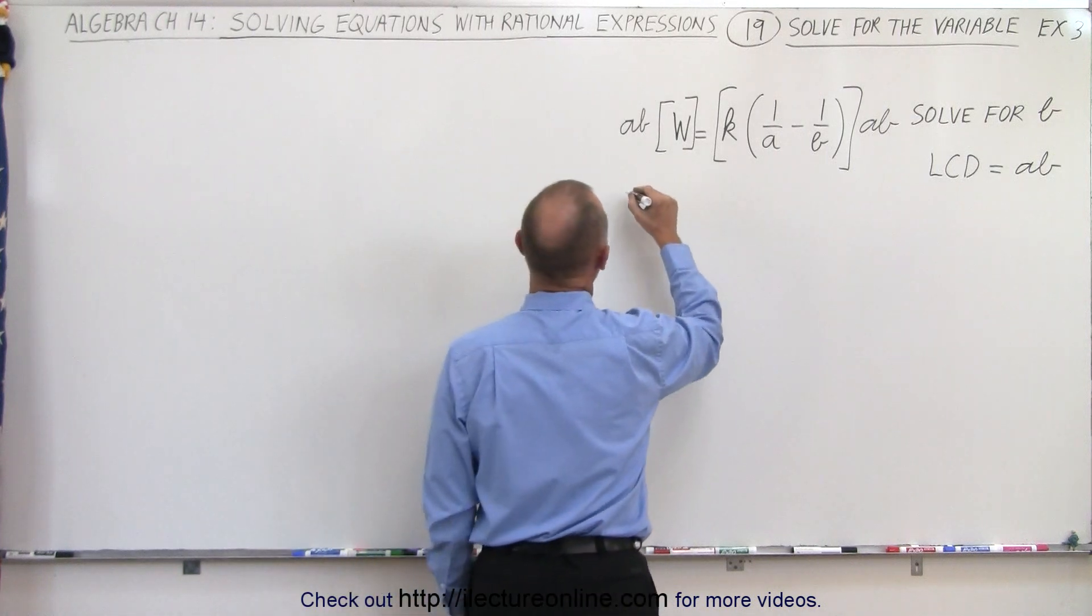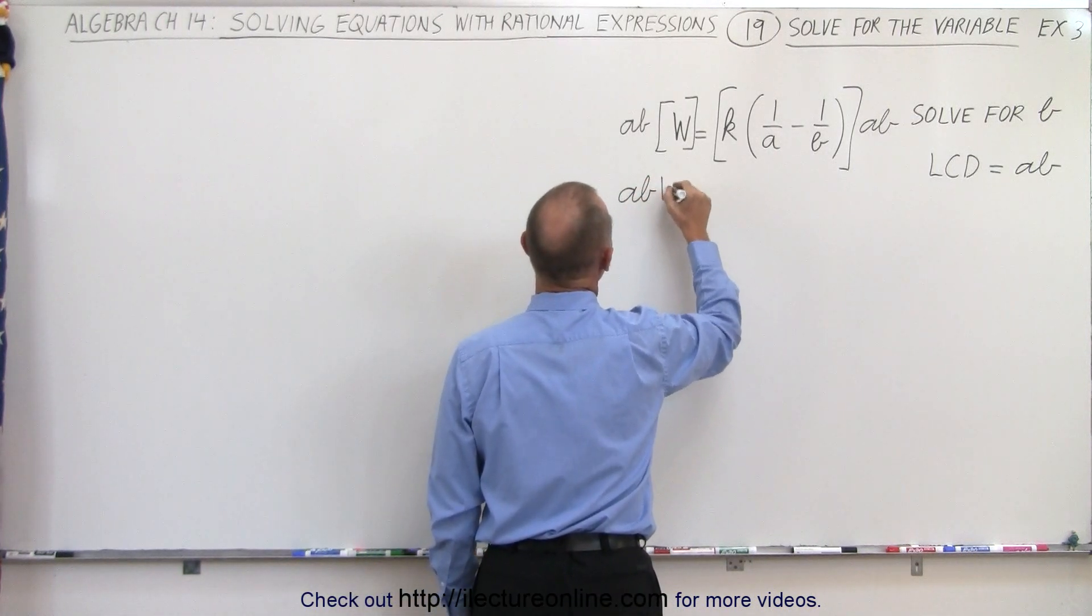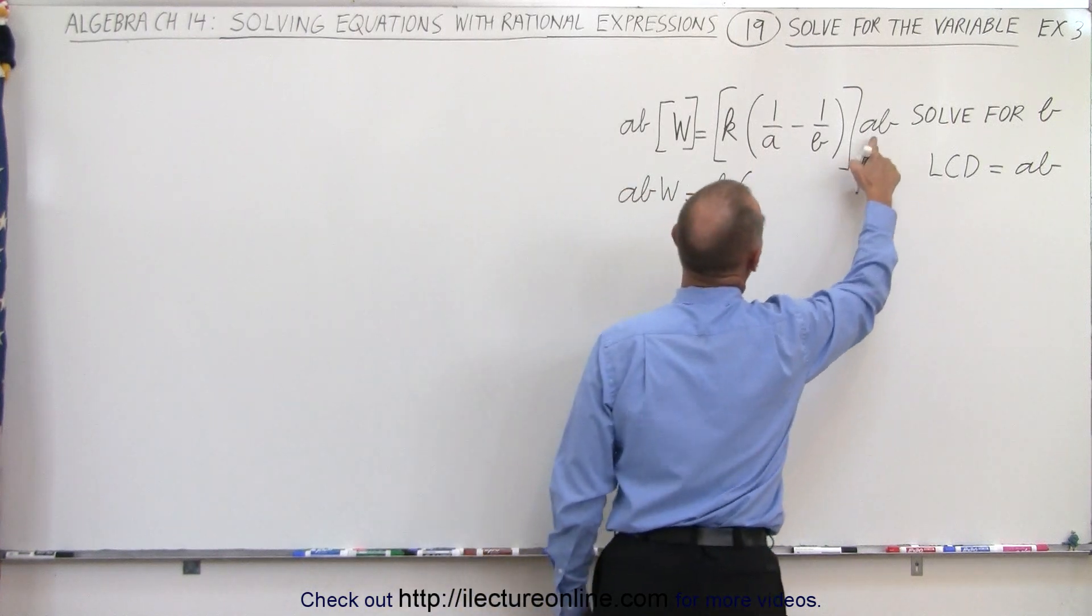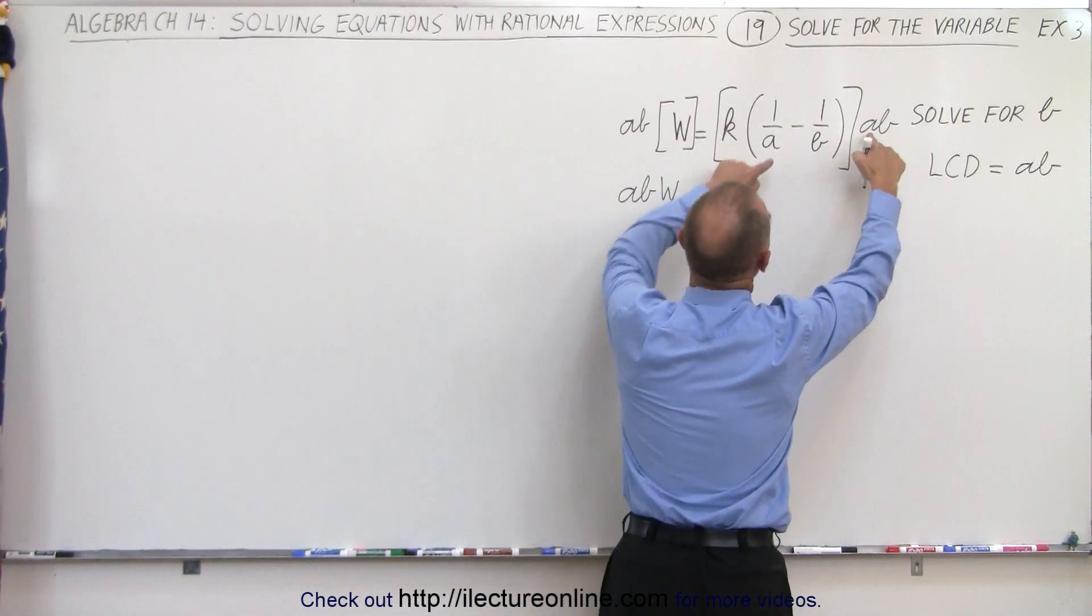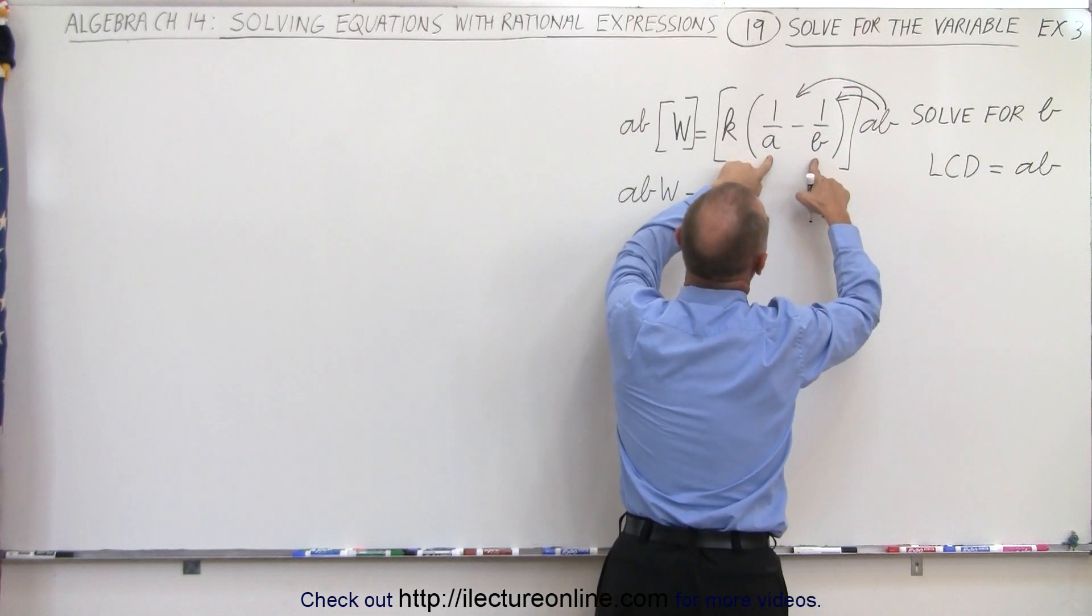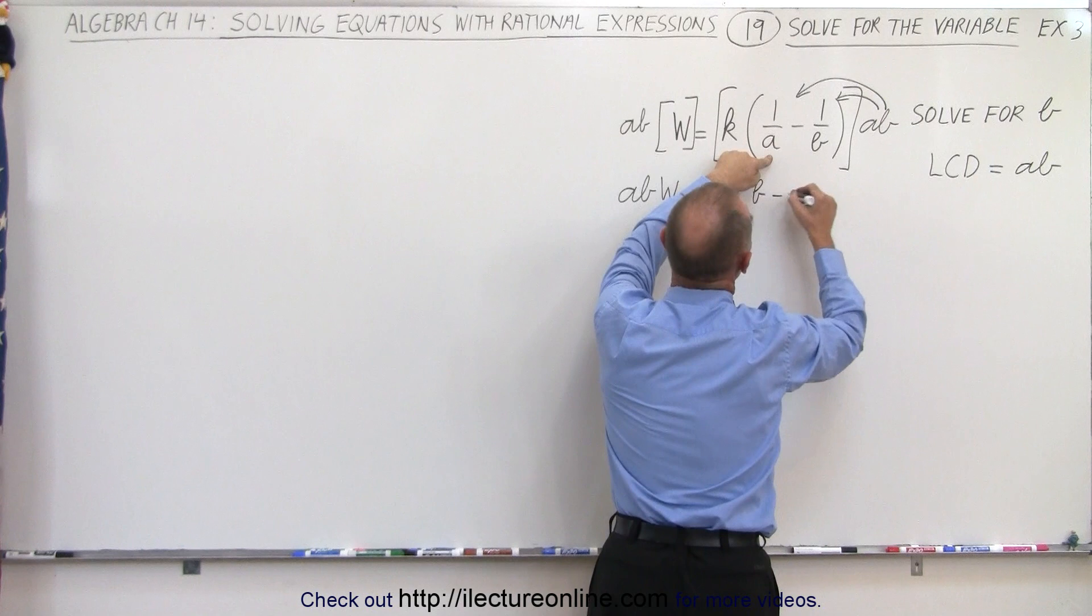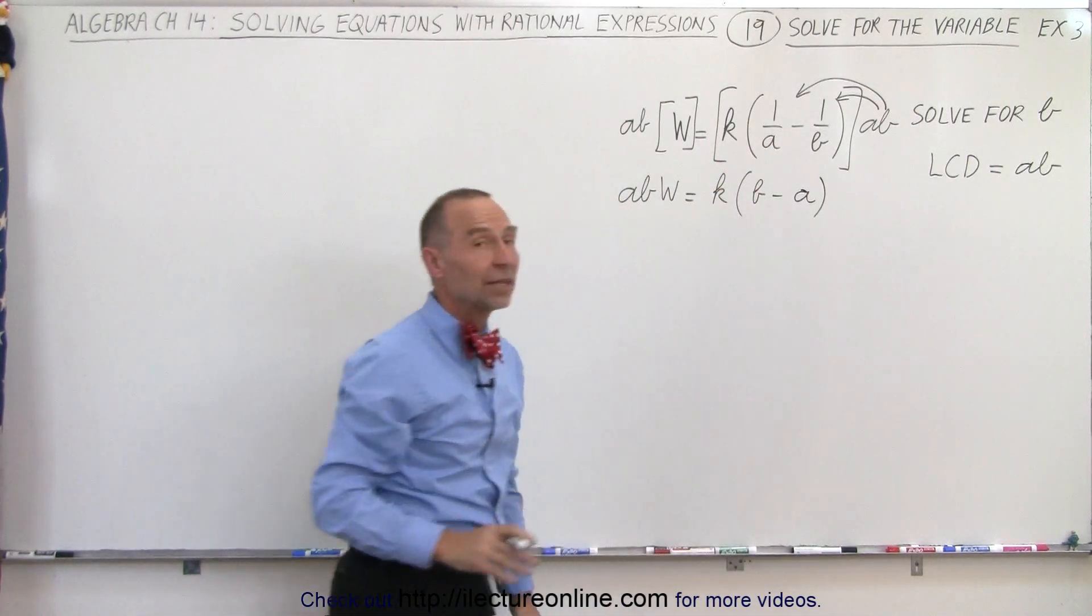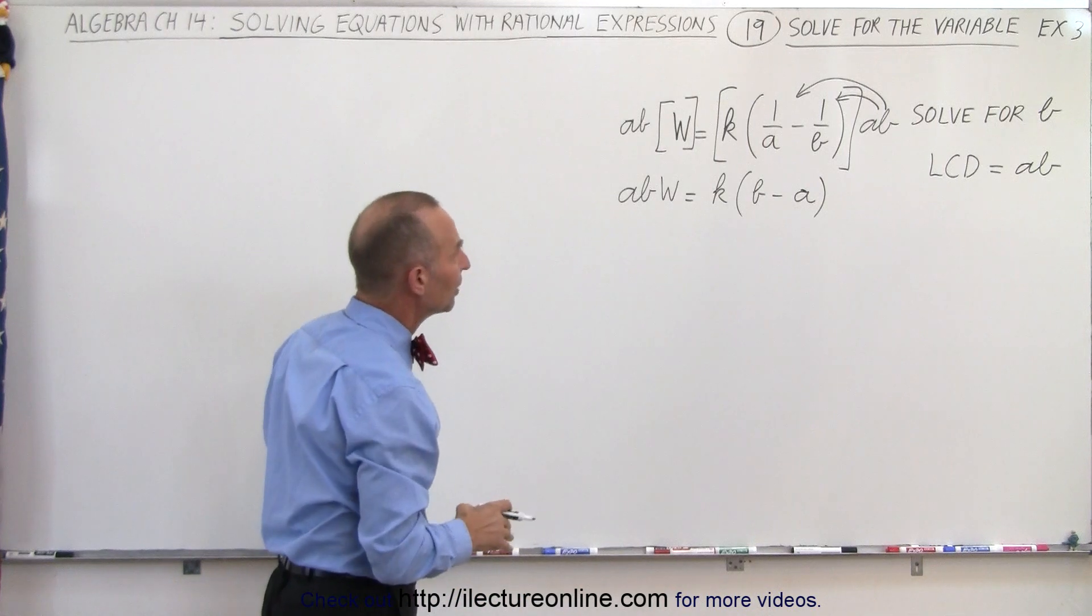Okay, on the left side, we have ab times w equals k times, on the right side, ab times 1 over a, the a's cancel, because what we're doing here is we're multiplying this by both of these fractions here. So the a's cancel, we're left with ab, minus here the b's cancel, so we're left with an a. So at least what we've done here is gotten rid of the fractions.